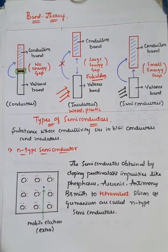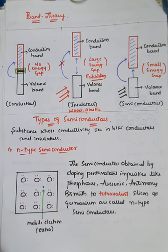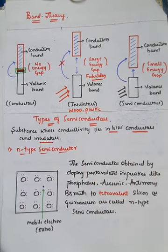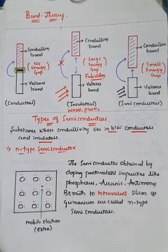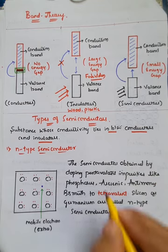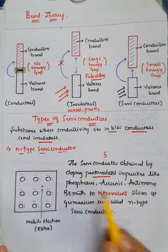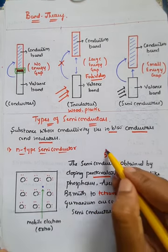The next important part is types of semiconductors. We already know the definition: a semiconductor is a substance whose conductivity lies between conductors and insulators. Semiconductors are generally classified into two types: one is n-type semiconductor and the second is p-type semiconductor. The n-type semiconductor is obtained by doping — doping means mixing — pentavalent impurity into tetravalent. Penta means five, so pentavalent impurities like phosphorus, arsenic, antimony, and bismuth are added to tetravalent silicon or germanium.